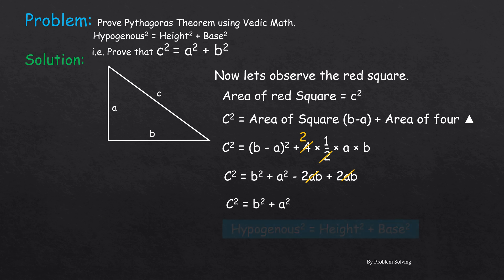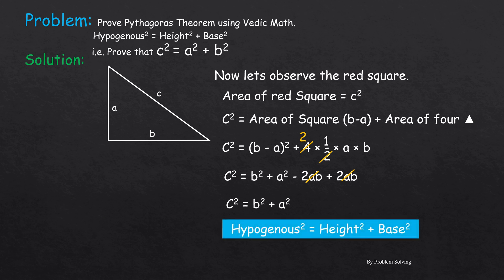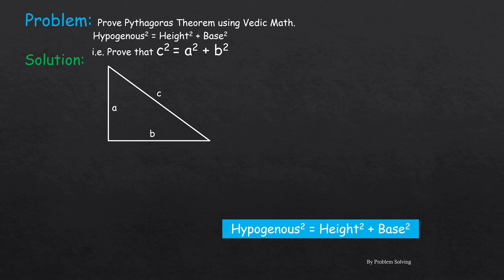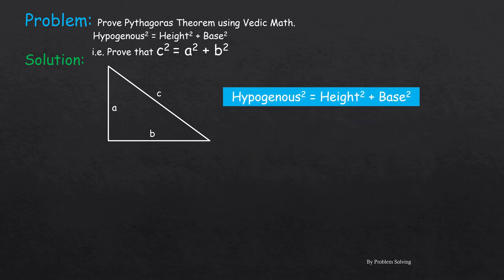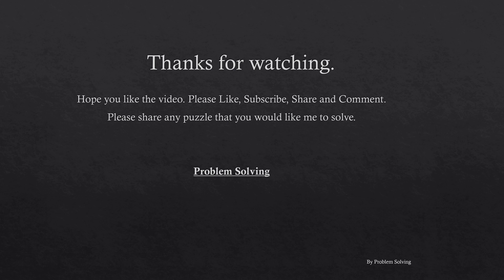Focusing on one of the triangles, we get that the hypotenuse squared is equal to height squared plus base squared. So in this video we were able to prove that it works. Let me know in the comments if you have any other ways of solving it, as this is just one method. Thanks for watching — please like, subscribe, share, and comment, and share any puzzle you'd like me to solve. Have a good day, bye!